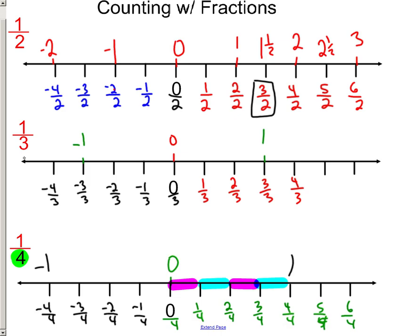Now when we use thirds, there's the same thing happening there. Between zero and one, there are three sections there. And each section is equal: one-third, two-thirds, three-thirds.